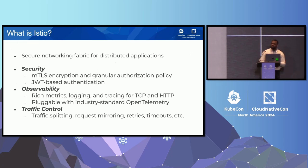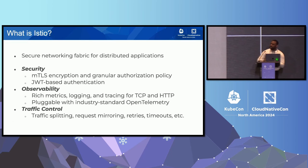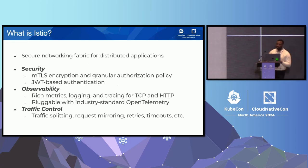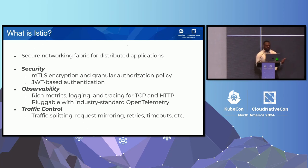There are those three pillars: Security, which gives you MTLS encryption, granular authorization policy, as well as JWT-based auth for your gateways and your actual applications. Observability and traffic control. Resiliency and reliability. Traffic splitting, canary deployments, things of that nature.